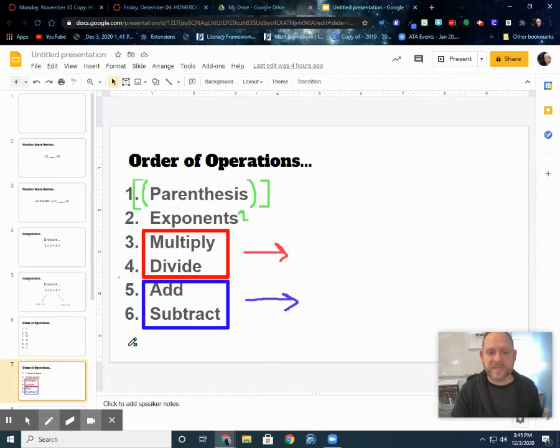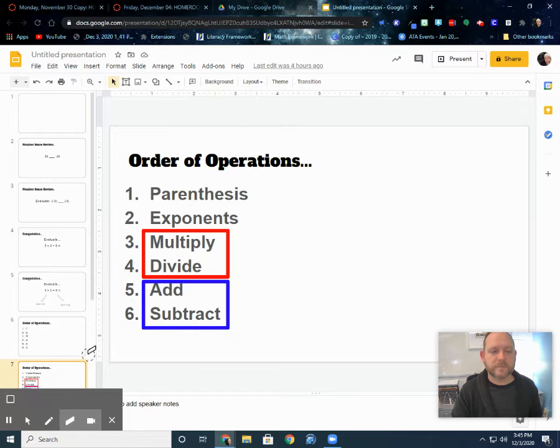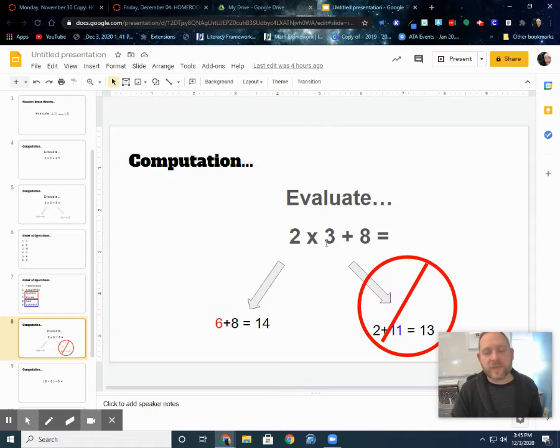So now using this PEMDAS method to go through and work on our problem, we would come down and let's work it through here. So in this case, because we want to multiply first, we have the 2 times 3 first, that gives us 6, plus the 8 would give us 14. Because we do the multiplication first, we don't have any parentheses or exponents, but then we would do the multiply and divide first, going left to right. So we did the multiplication first, then the addition. That's why 14 is the correct answer for this problem.